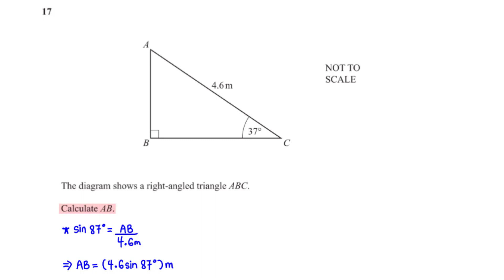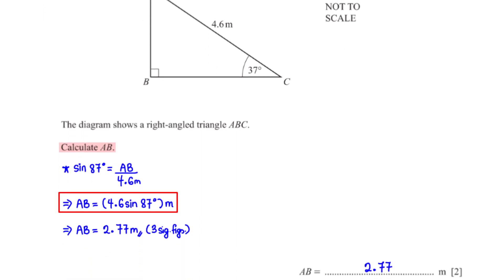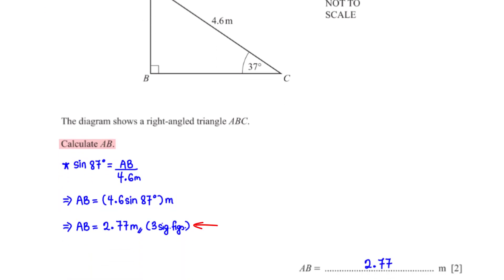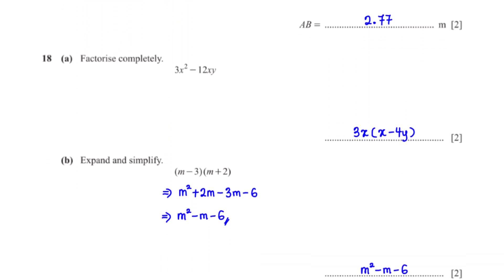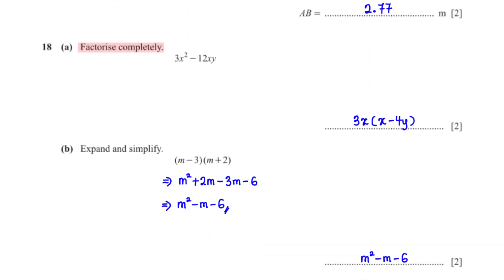The diagram shows a right-angled triangle ABC. Calculate AB using trigonometry (SOH CAH TOA): sin 87° = AB/4.6 m. Making AB the subject gives AB = 4.6 × sin 87°, which equals 2.77 m rounded to three significant figures.